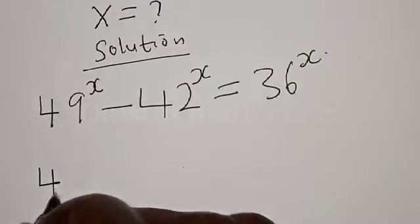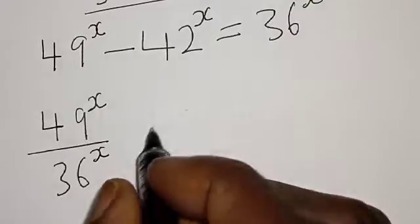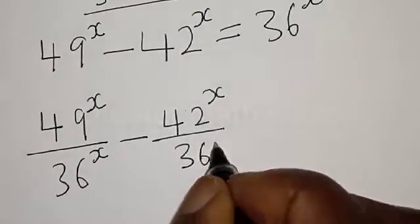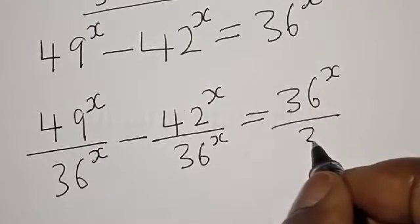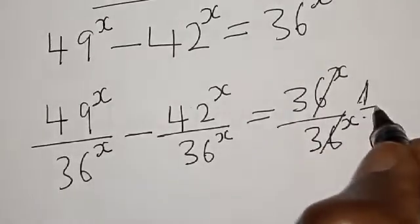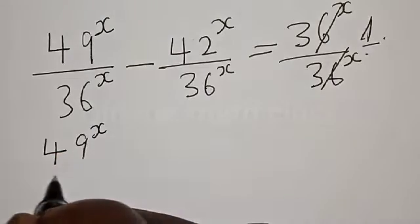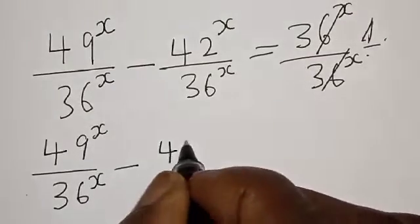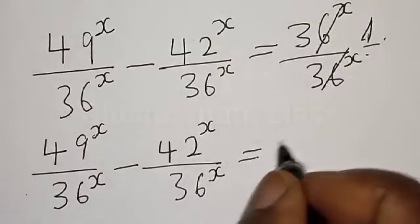That is, we have 49 raised to power s divided by 36 raised to power s, minus 42 raised to power s divided by 36 raised to power s, is equal to 36 raised to power s divided by 36 raised to power s. Then this one will cancel this, which gives 1. Now we have 49 raised to power s divided by 36 raised to power s, minus 42 raised to power s divided by 36 raised to power s, is equal to 1.